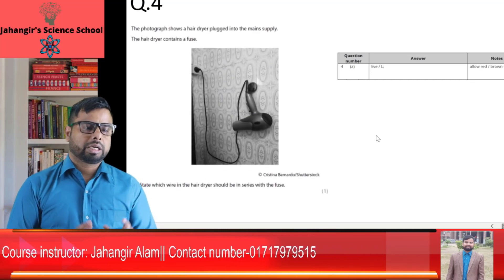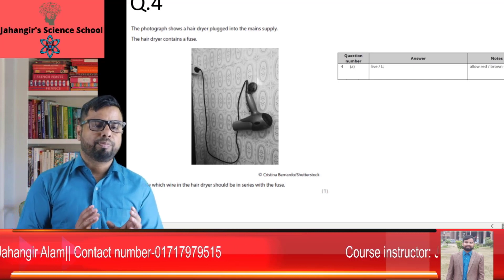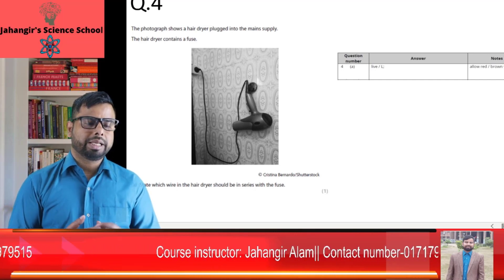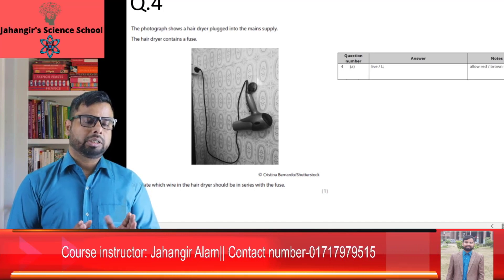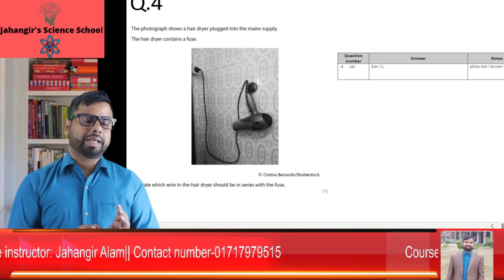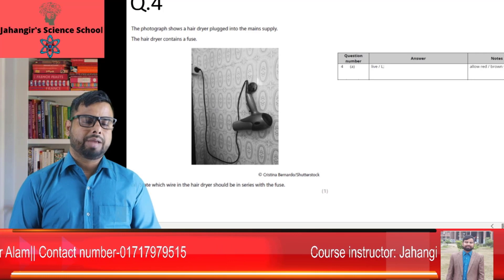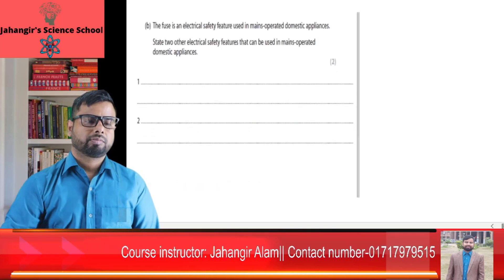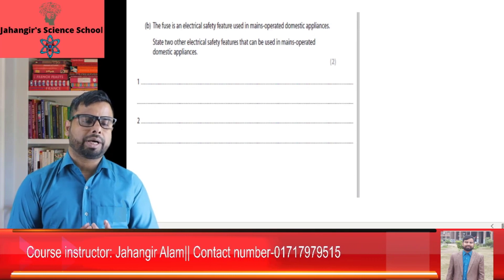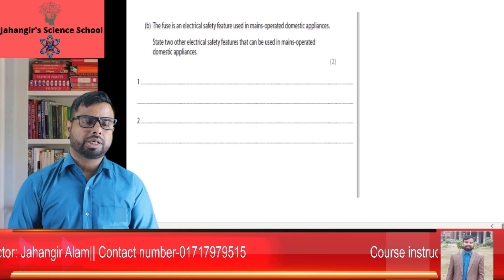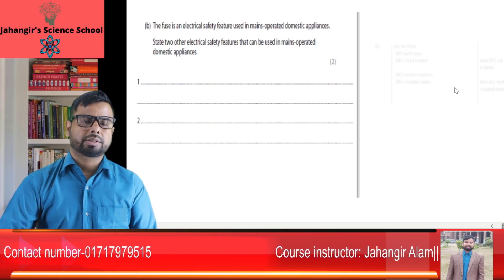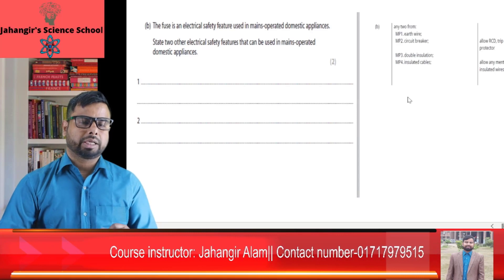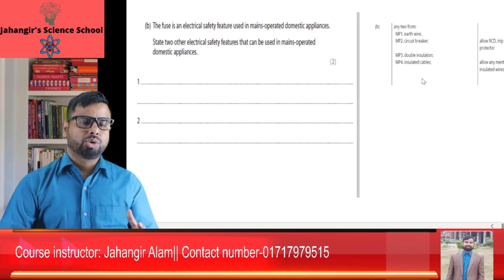Question number 4: The photograph shows a hairdryer plugged into the mains supply. The hairdryer contains a fuse. State which wire the fuse should be connected in series with: the fuse is always connected in the live wire — the red or brown insulated wire. State two other electrical safety features that can be used in mains-operated domestic appliances: earth wire, circuit breaker, double insulation, or insulated cable.